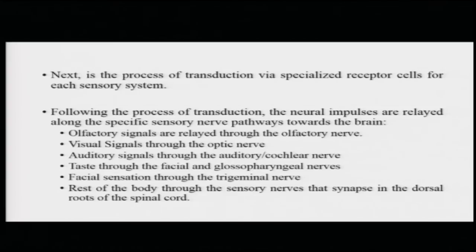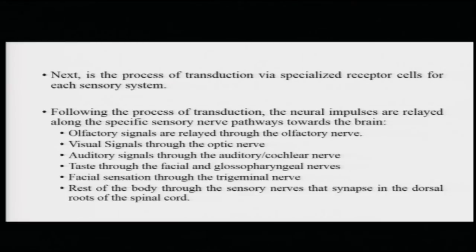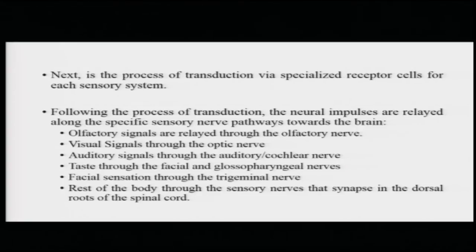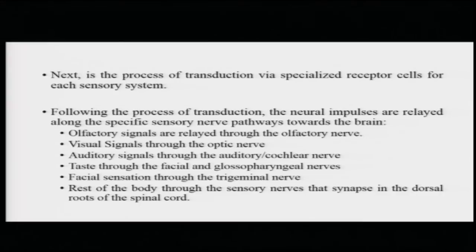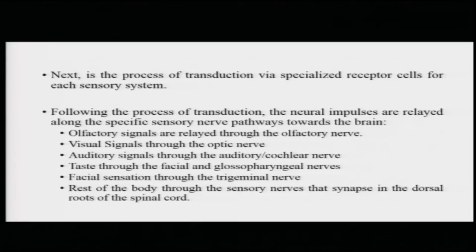Once the stimulation has been received and transduced by specialized receptor cells into neural impulses, these neural impulses converge to different areas of the brain. Olfactory signals travel to the primary olfactory cortex through the olfactory nerve; visual signals through the optic nerve; auditory signals through the auditory or cochlear nerve; taste signals through the facial and glossopharyngeal nerves; facial touch sensations through the trigeminal nerve. The rest of the body sends sensory signals through sensory nerves that synapse at the dorsal roots of the spinal cord and enter the brain stem from there.